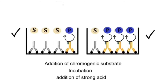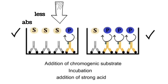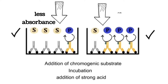If the number of enzyme-linked antibodies in the well is less, less product will form and the absorbance value will be less. In the second case, if enzyme-linked antibodies are more, more product will be formed and therefore the absorbance value will also be more.